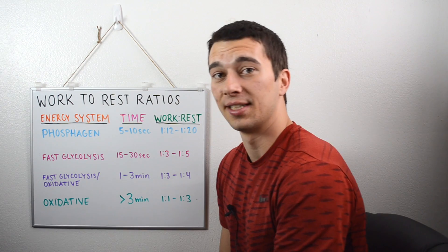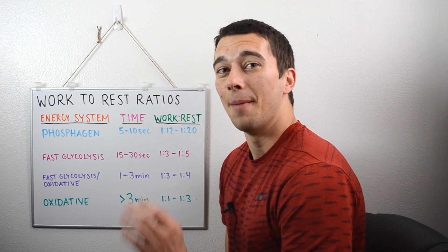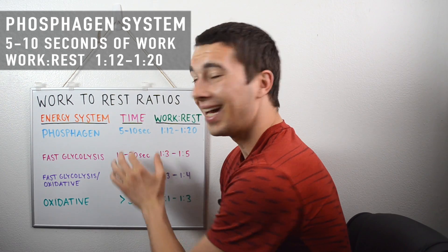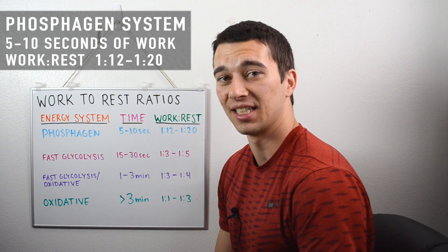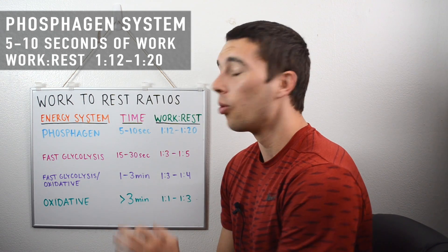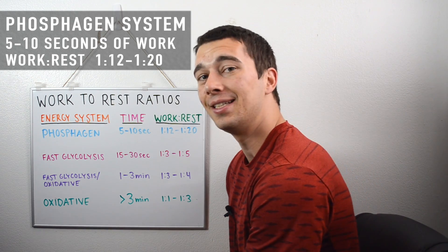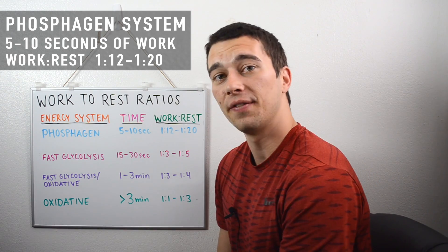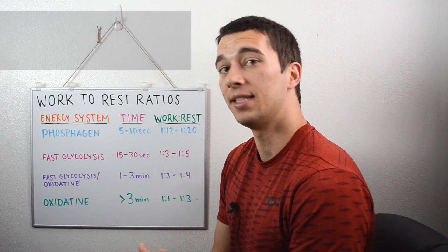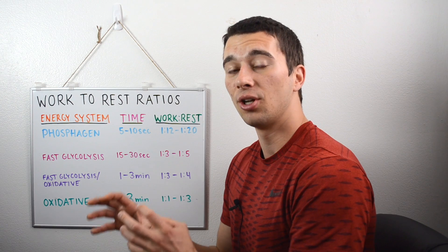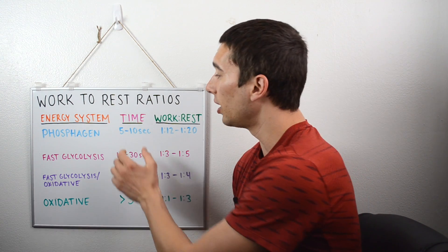First we have the phosphagen system. When we're thinking about the phosphagen system, this is really less than 10 seconds of work. So if we're thinking about something like an 8-second sprint or a 10-second sprint, we're going to primarily use the phosphagen system, also called the ATP-PC cycle. The molecule phosphocreatine and adenosine triphosphate in our muscle is going to be supplying the muscles with most of the energy if we're only running for 10 seconds.